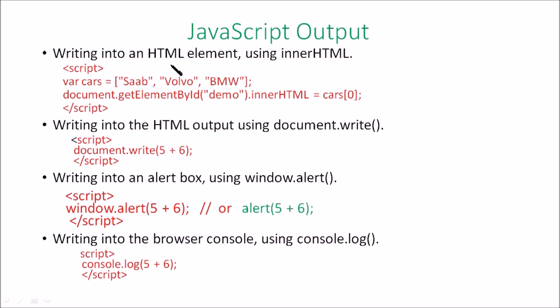Here in the first example you can see a JavaScript array is declared with a name 'cars' and the typeof car is printed in the first statement. In the second statement, using document.write, 5 plus 6 equals 11 is printed. In the third, an alert box appears and will display 11. You can use simply alert or window.alert interchangeably. So there are mainly four ways you can print output in JavaScript.